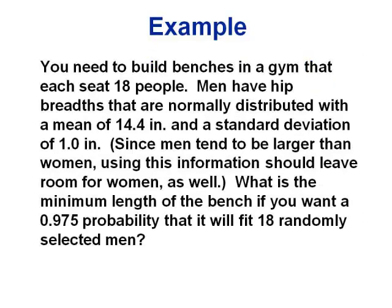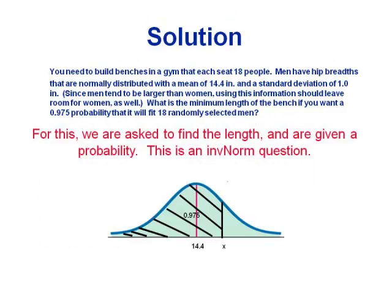One last example going the other direction. We want to build benches that seat 18 people. Men's measurements are used since men tend to be bigger — if it fits them, it fits women. Men's hip breadths are normally distributed with a given mean and standard deviation. We want the minimum bench length so there's a 0.975 probability it fits 18 randomly selected men. This is an inverse norm question because we're given a probability. We want 97.5% of groups to fit, meaning they're small enough — so we shade to the left.